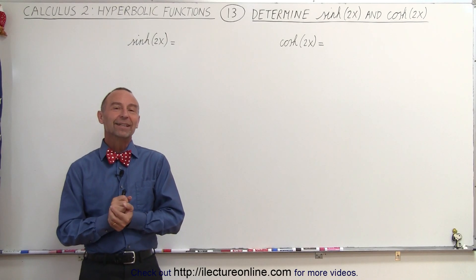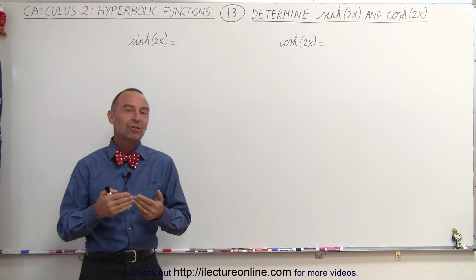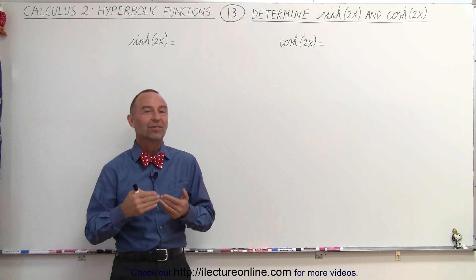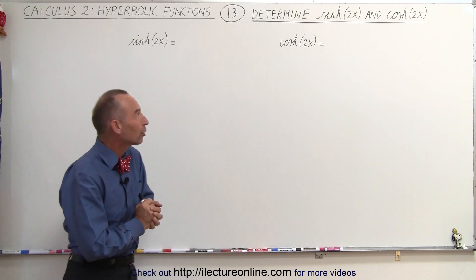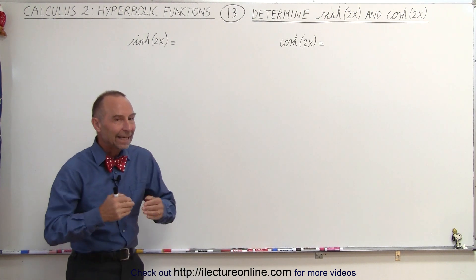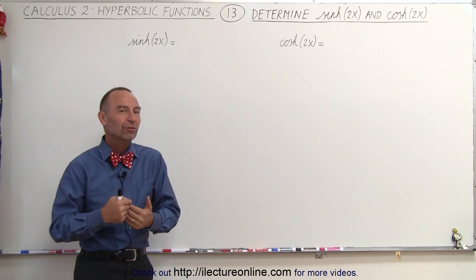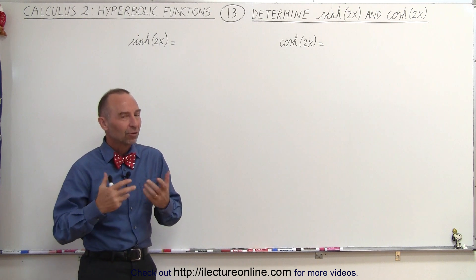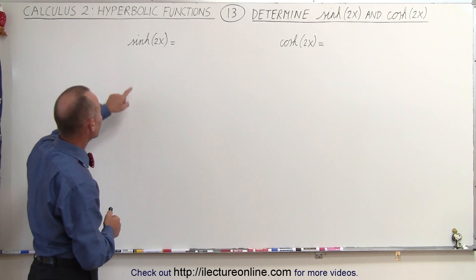Welcome to ElectronLine. Now let's try to find the identities for the hyperbolic sine of 2x and the hyperbolic cosine of 2x. It's very similar to the trigonometric functions, so let's see what this ends up to be.